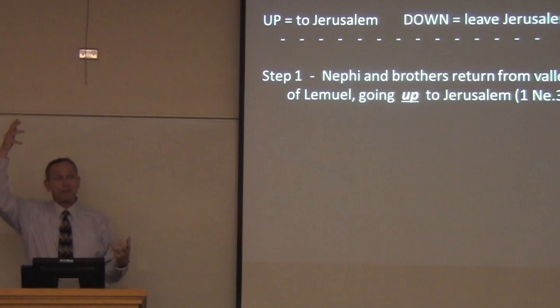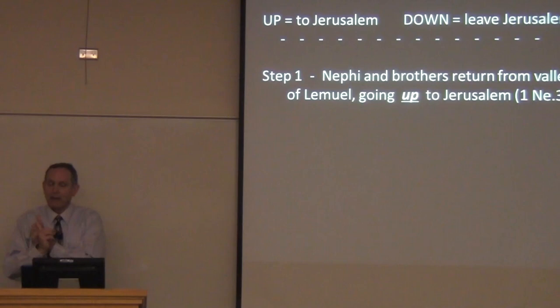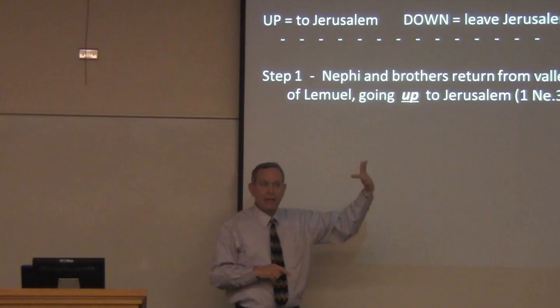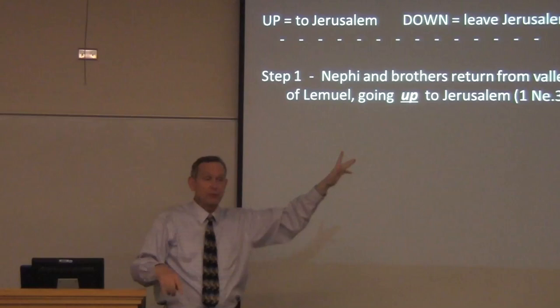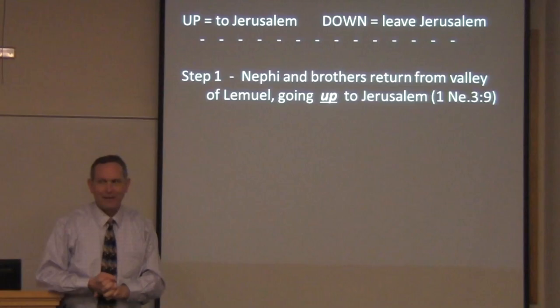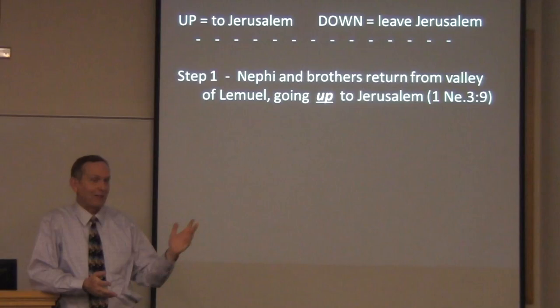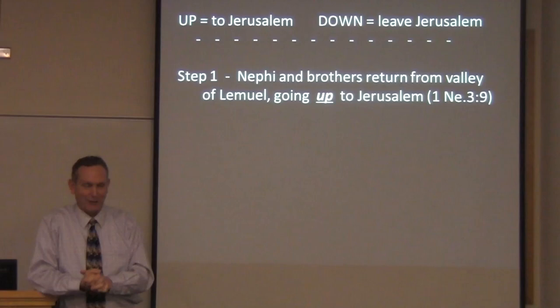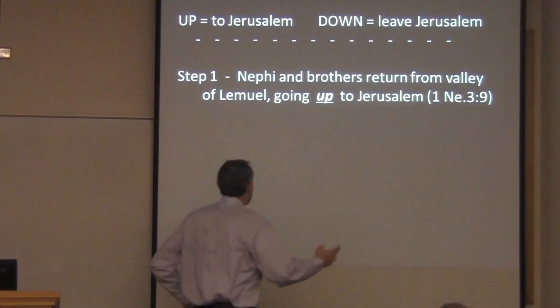Look at this in three steps. Step one is in 1 Nephi 3:9. When Lehi asks the boys to go from the Red Sea — the Valley of Lemuel — back to Jerusalem to get the plates of Laban, which by the way is a 250-mile trip, and takes two weeks of walking through the desert. When they do, Nephi notes that they go up to Jerusalem.